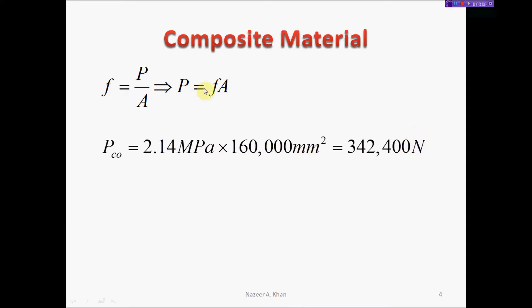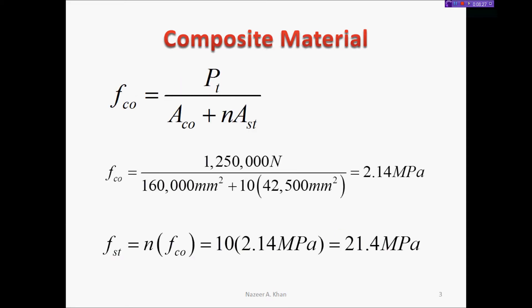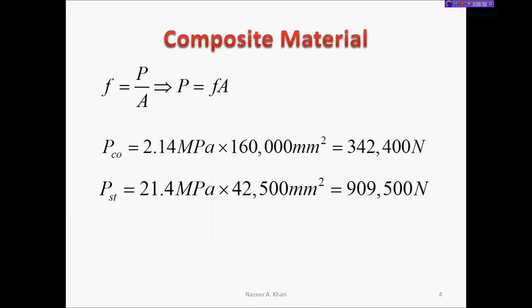Using the same formula for steel: P_st = 21.4 MPa × 42,500 mm² = 909,500 newtons. Keep in mind we rounded these numbers to three significant figures. If you add these values, they should equal the total applied load but will be slightly off due to the rounding that we have done.